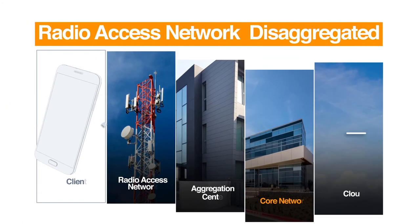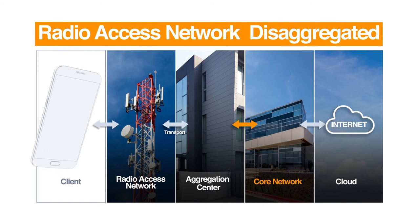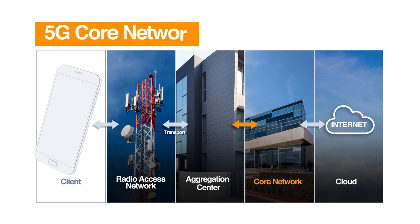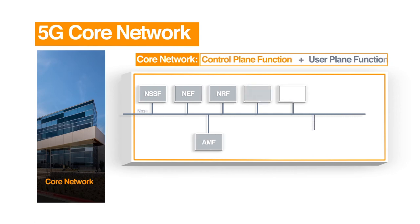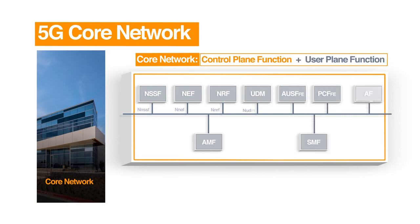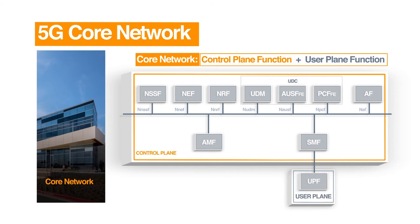So far we have looked at how the packet traverses through the radio access network. Now let us look at the next leg of the packet journey and focus on the 5G core network. The core network is the central element providing services to customers connected by the access network — think of it as a command center or traffic control center. 5G core networks follow a service-based architecture in which functions have been virtualized, known as network function virtualization.